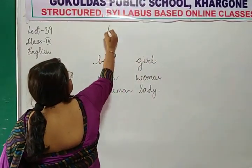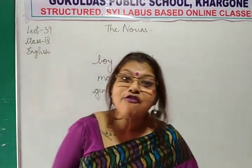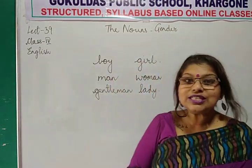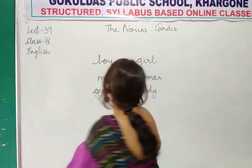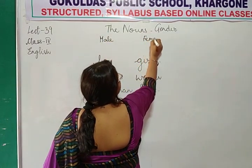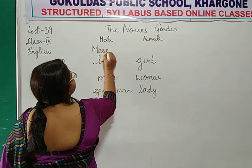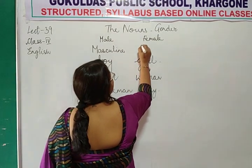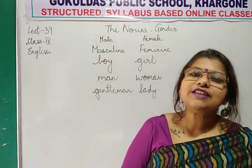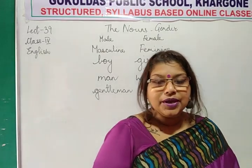Children, these are all nouns. You already know what nouns are. But nouns in the form of gender — what is a gender? Who can tell me? Gender means male or female. We can also call it masculine and feminine. Masculine and feminine gender. So we are going to learn today about genders.